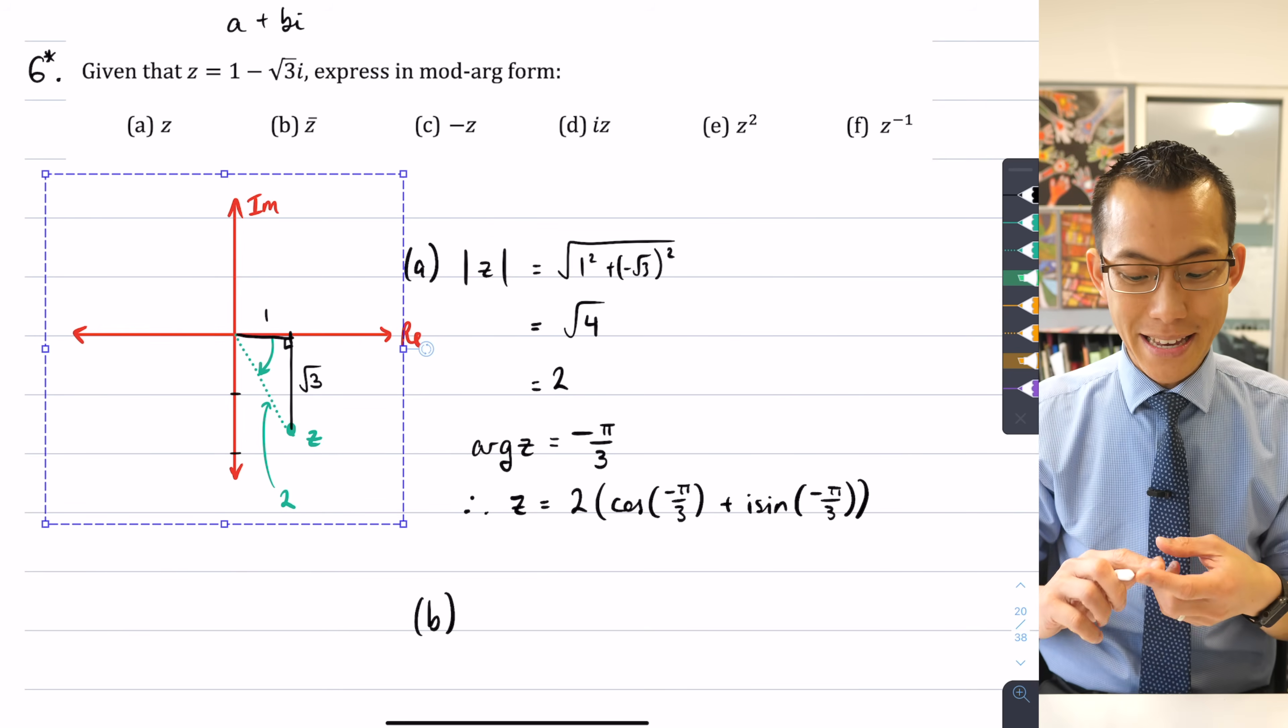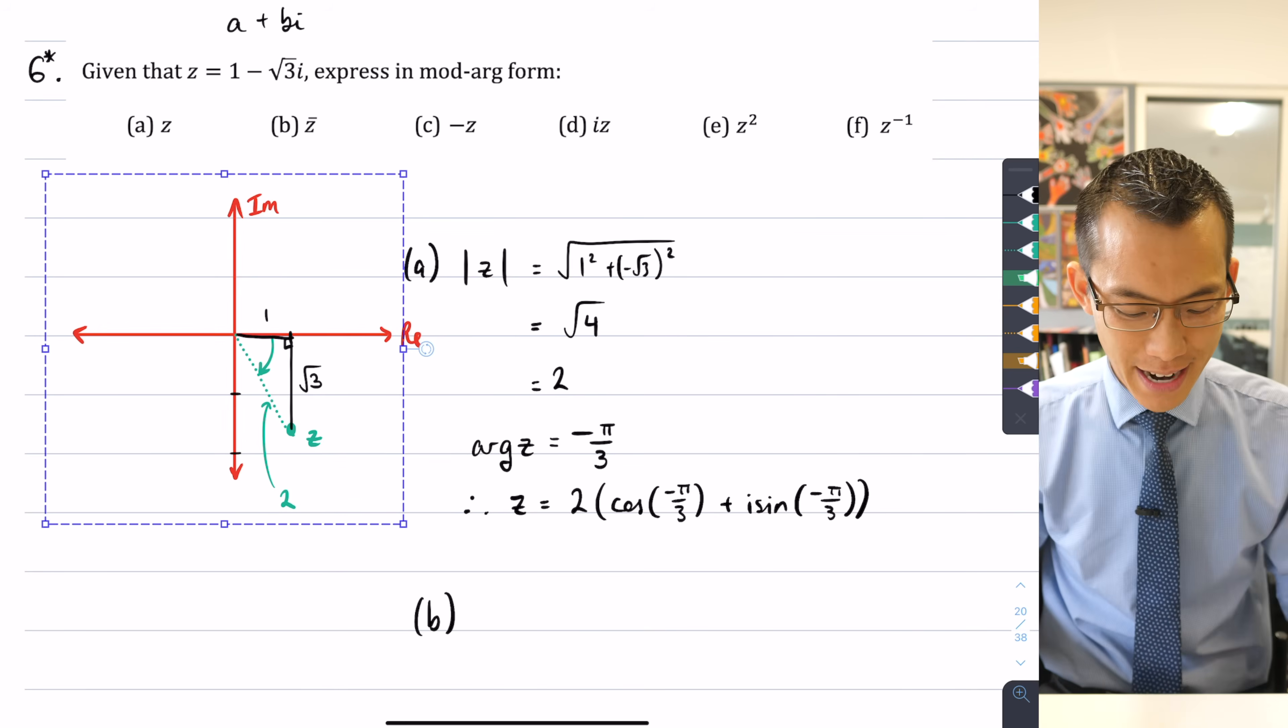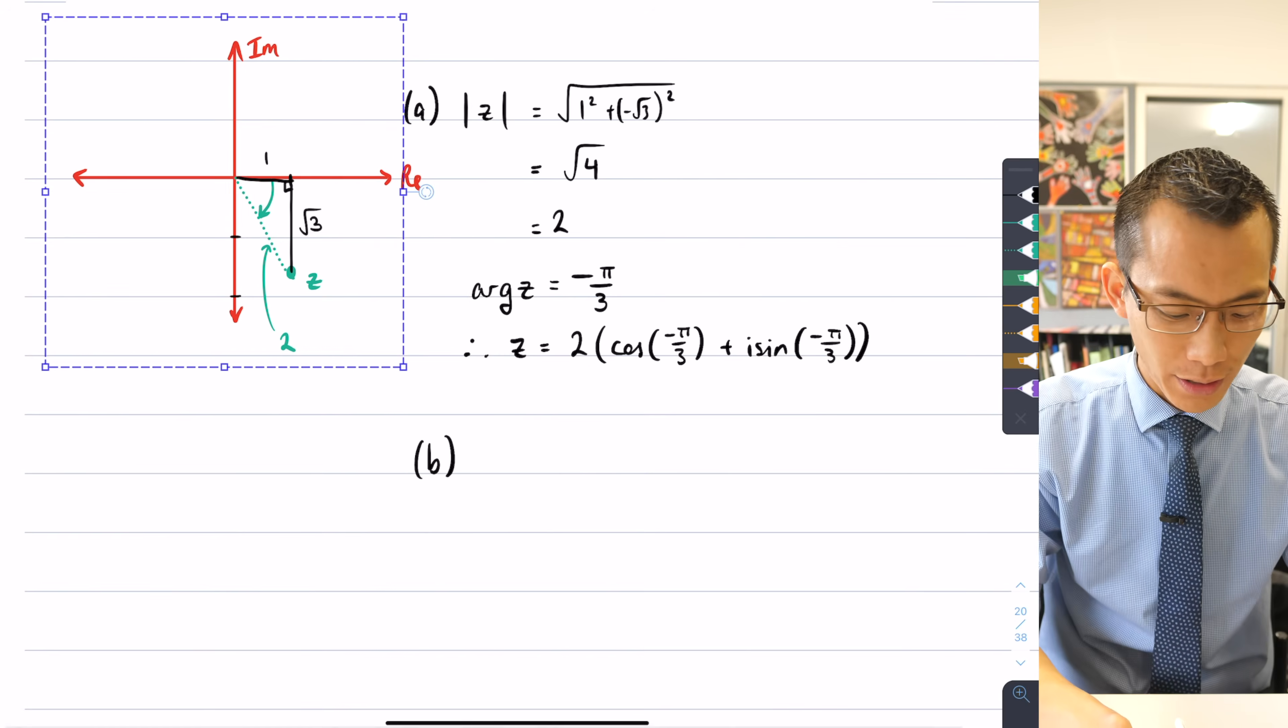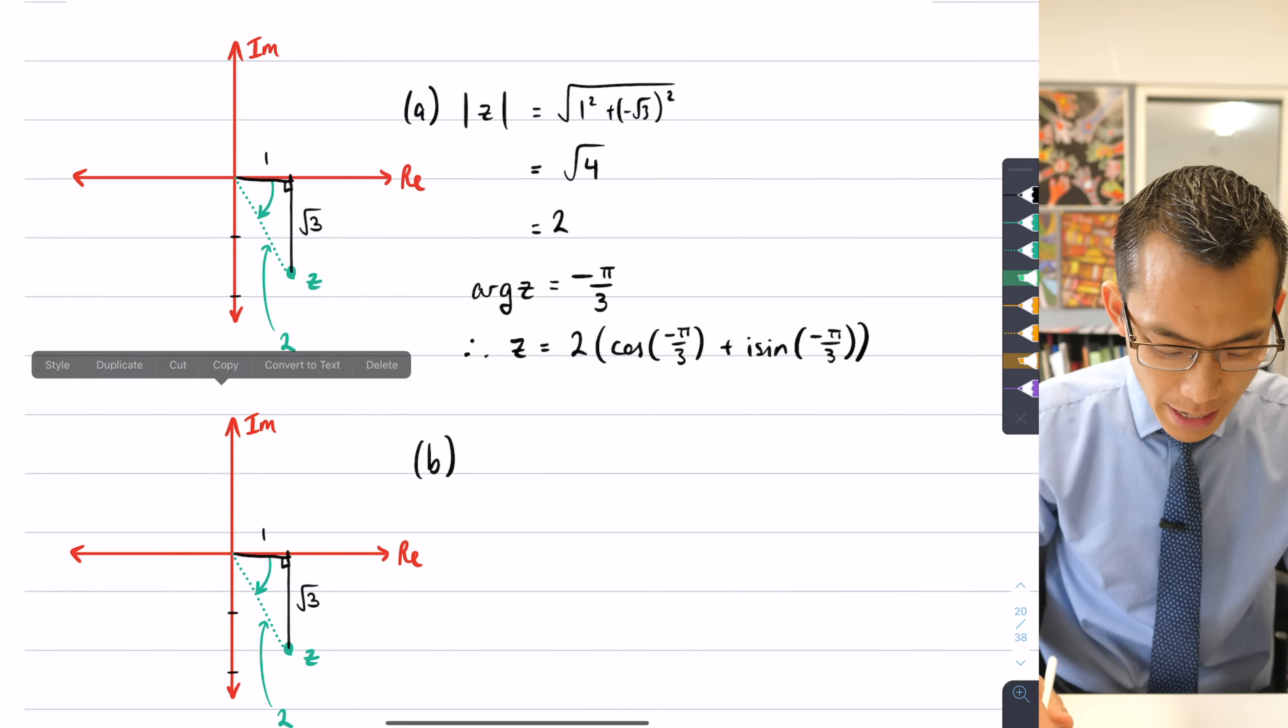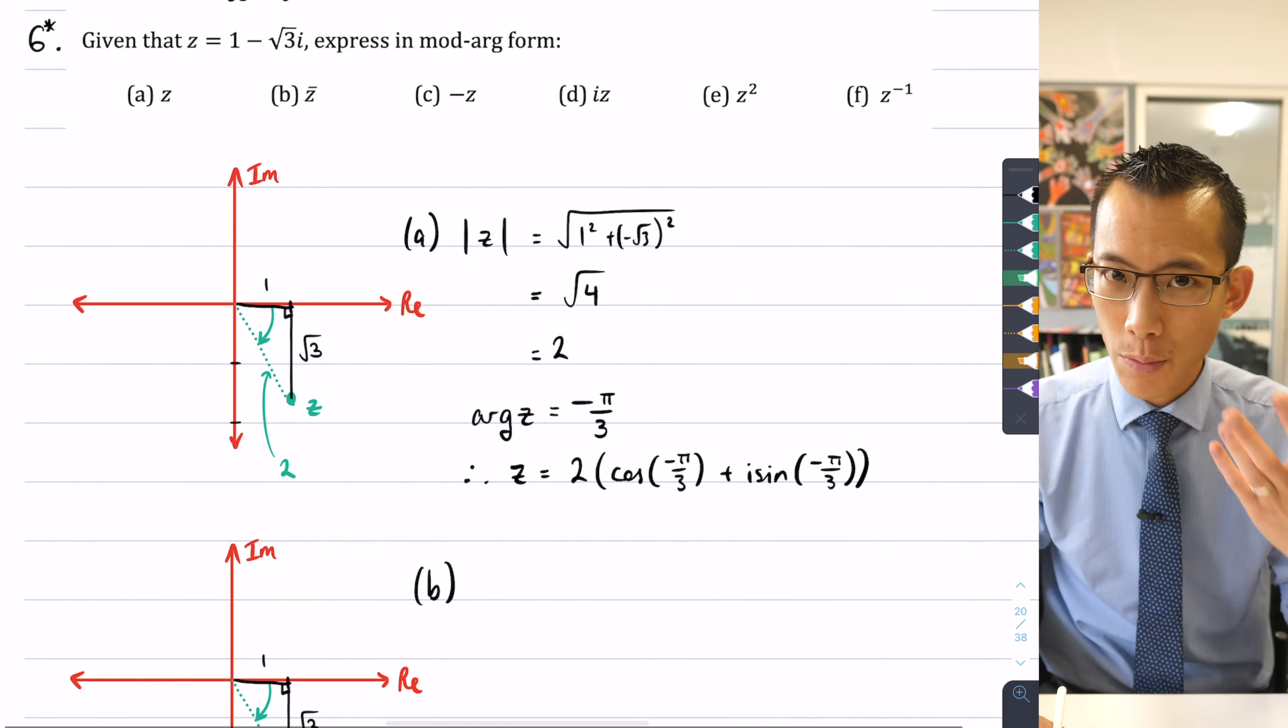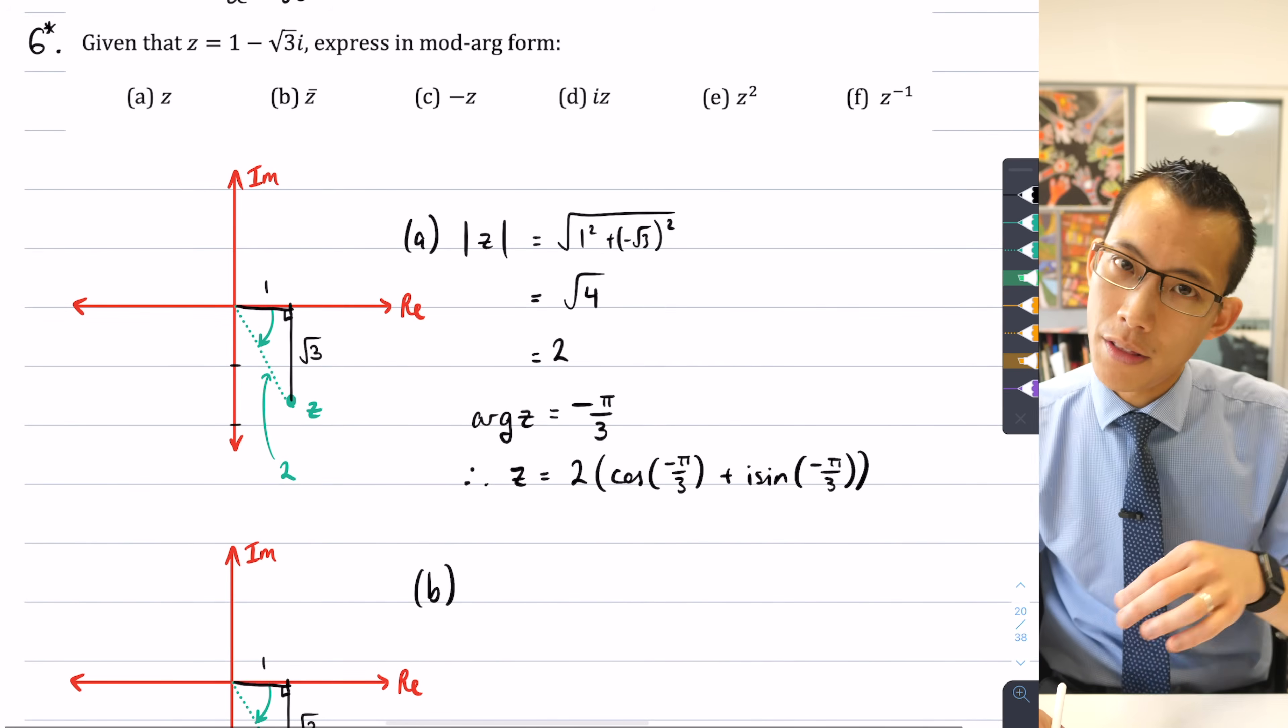So this is just for the sake of clarity. So I'm going to duplicate this down here. And let's think about where would z̄, where would the conjugate of z sit on this diagram?